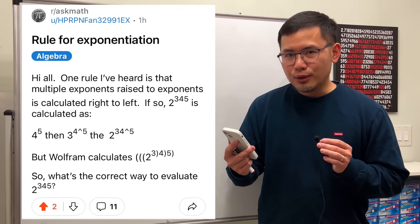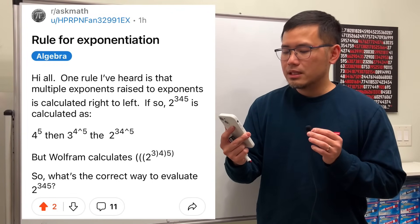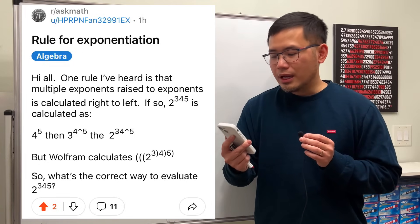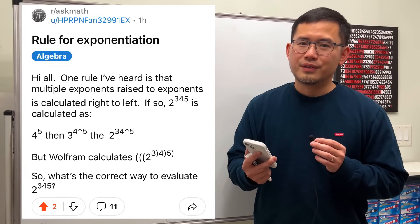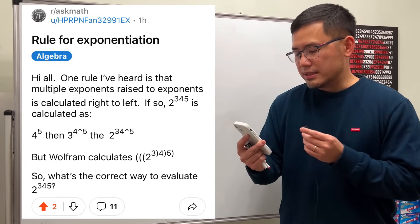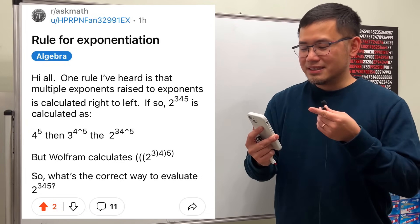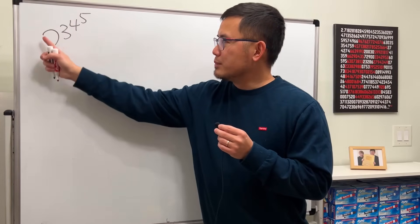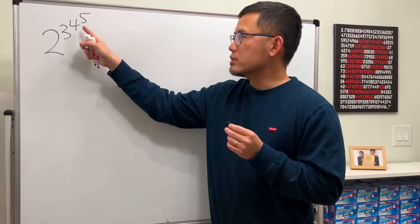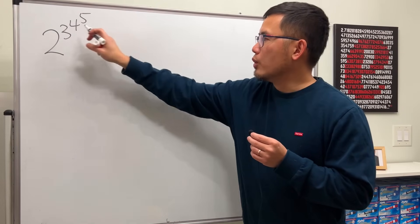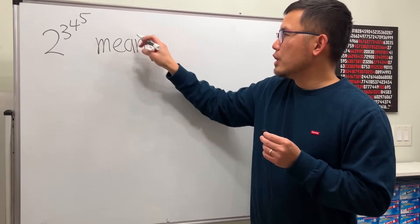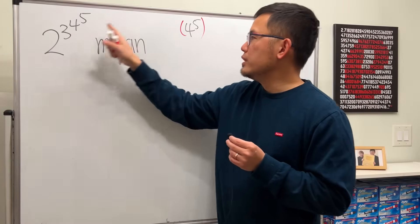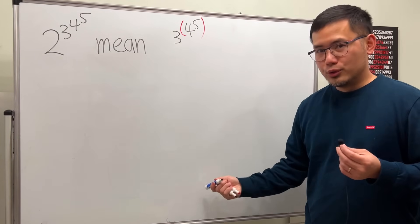One rule I've heard is that multiple exponents raised to exponents is calculated right to left. If so, how do we calculate 2 to the third to the fourth to the fifth? It's meant to be a power tower. If we have an expression written down like this, we start with the topmost exponent — so 4 to the fifth power first. Work that out, and after that we do 3 to whatever that is, which is already a huge result.